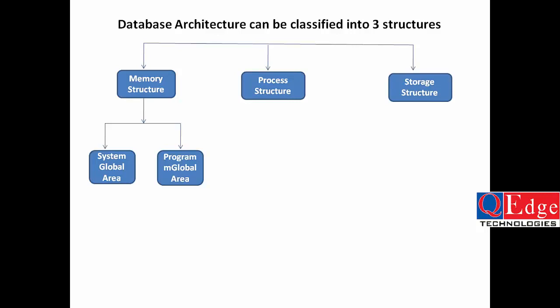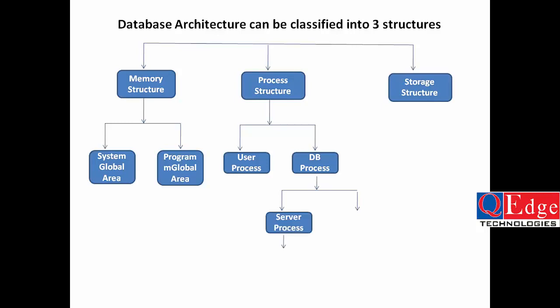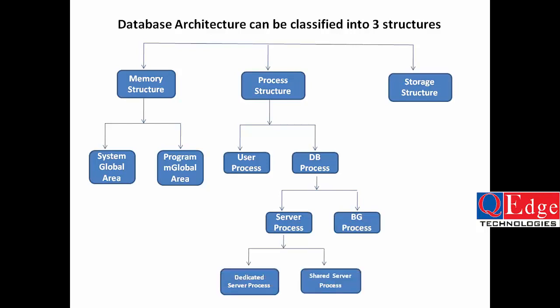In the DBA classes, we will understand one by one all these structures — first the memory structure briefly, then the System Global Area and its components, followed by the Program Global Area. After completing memory structure, we will enter the process structure, which includes user process (front-end users using the application or tool, also known as client process) and database process (backend at the database side, including server process and background process).